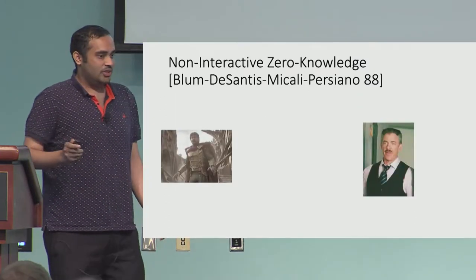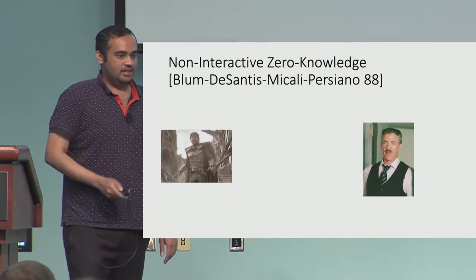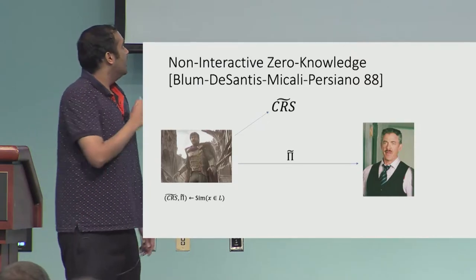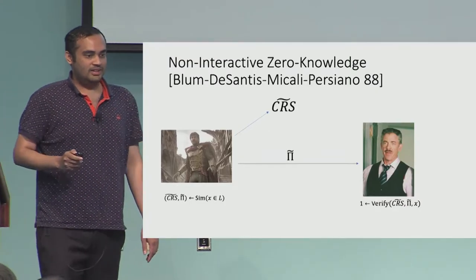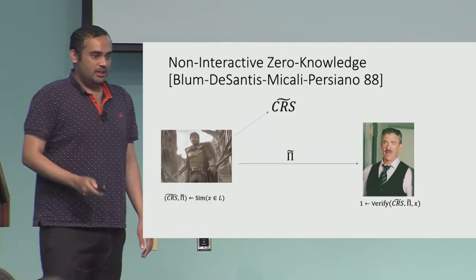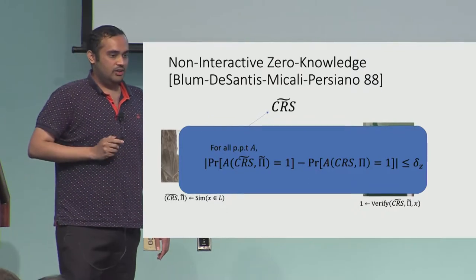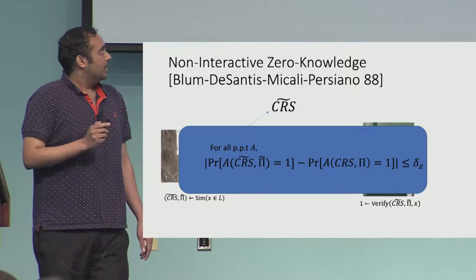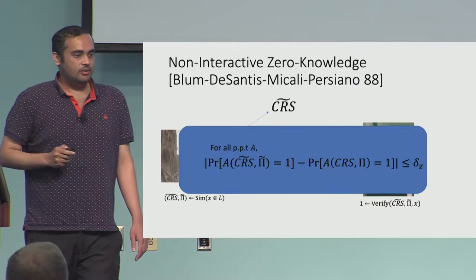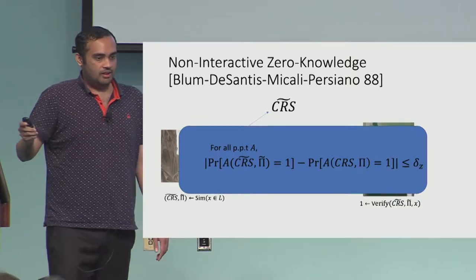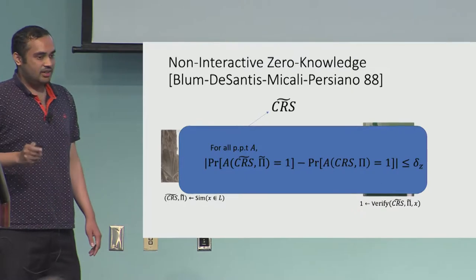There is also the zero knowledge property, in which there is a simulator — I will denote it with Mysterio. It takes an instance X, and it can fake a CRS and a proof and gives them to the verifier. The zero knowledge property says that for any polynomial-time cheating verifier, the probability with which it can distinguish between a fake proof and CRS generated by the simulator versus an honest proof is bounded by probability δZ. I will refer to δZ as the zero knowledge error.